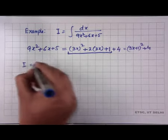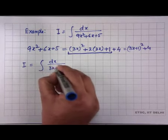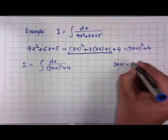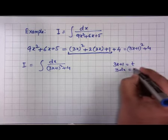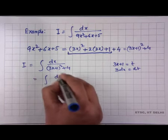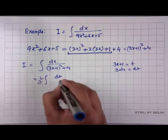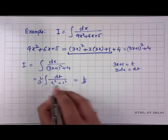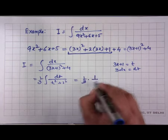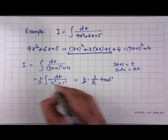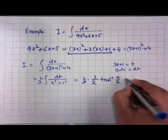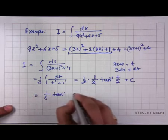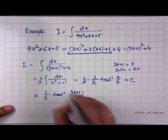So ∫dx/(9x²+6x+5) = ∫dx/((3x+1)²+4). Substituting 3x+1 = t, so 3dx = dt, the integral becomes (1/3)∫dt/(t²+2²) = (1/3)·(1/2)·tan⁻¹(t/2)+C = (1/6)·tan⁻¹((3x+1)/2) + C, which is the same result as before.